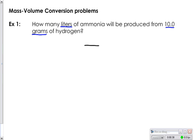If you look at the problem again, it says how many liters of ammonia will be produced. That means ammonia, which is NH3, is a product. We're producing ammonia from the elements hydrogen and nitrogen, both of which are diatomic molecules.